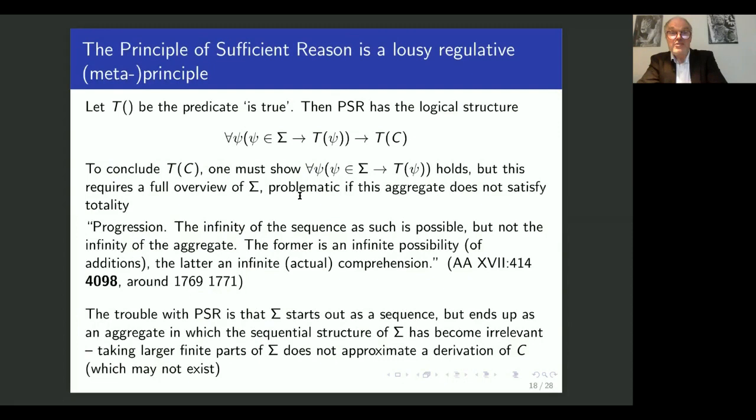Well, to put it bluntly, the principle of sufficient reason is a very lousy regulative principle. And the reason has to do with infinity and completion or totality. So let T be the predicate is true, that the principle of sufficient reason has been for all consequences, for all judgments psi, if psi is in the set of consequences sigma, then psi is true, that's the antecedent. This implies that the cognition C is true.